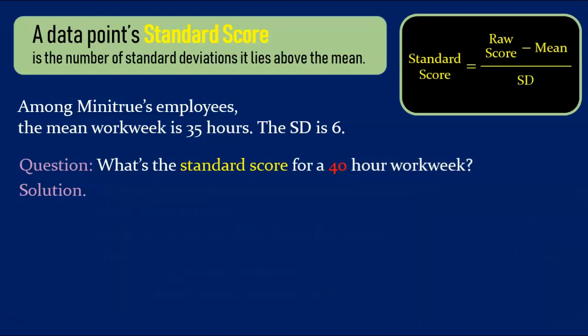Let's take another example. What's the standard score for a 40-hour workweek? We start with our raw score of 40, subtract off the mean of 35, and then divide the result by the standard deviation of 6 to find that the standard score here is 5 sixths. That is, someone who works 40 hours a week at MiniTrue works 5 sixths of a standard deviation above the mean.